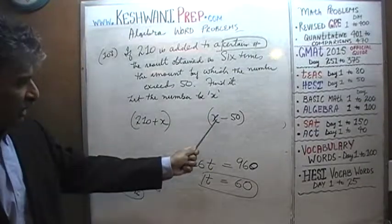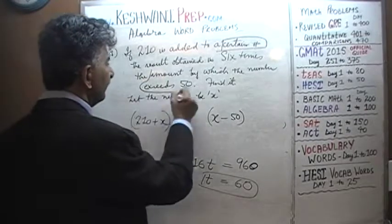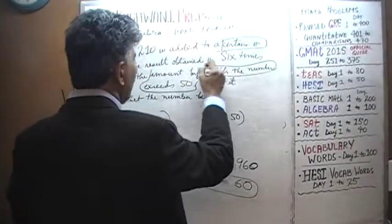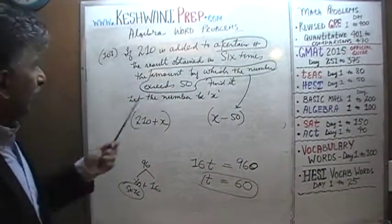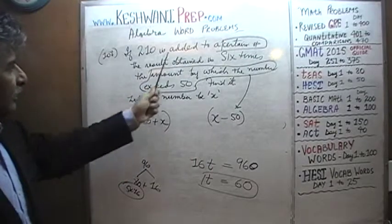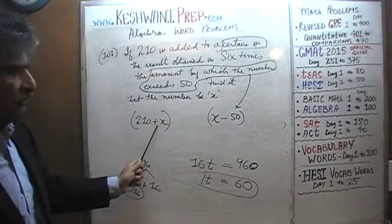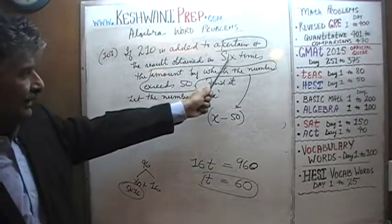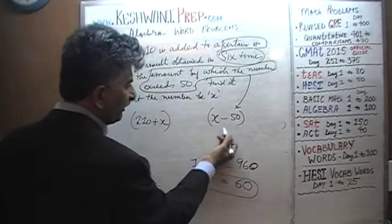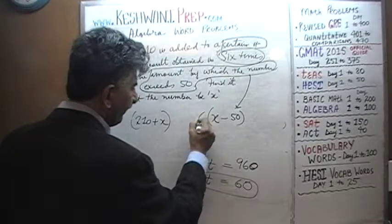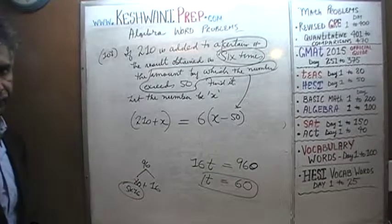The amount by which the number exceeds 50 is x minus 50. We are told that if 210 is added to the number, the result we obtain is 6 times that quantity — 6 times (x minus 50). That's our equation.